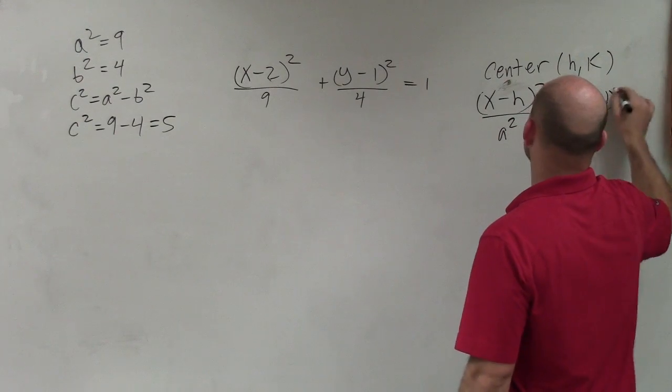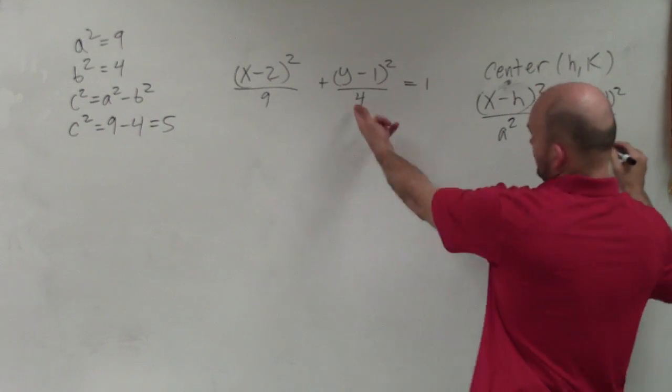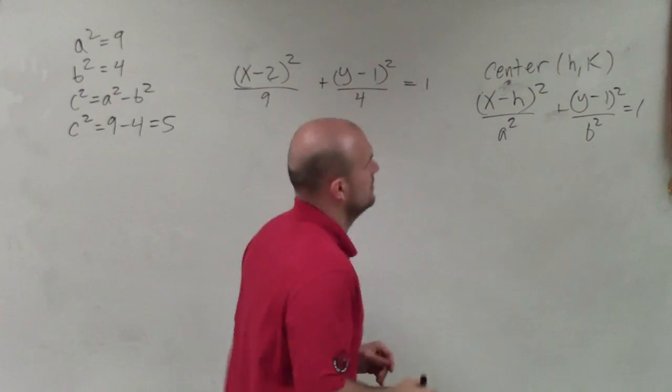Plus (y-k)²/b², which in this case is 4, equals 1. That's k.